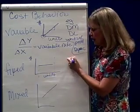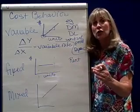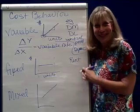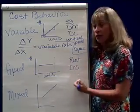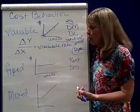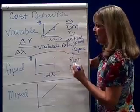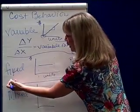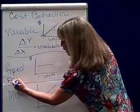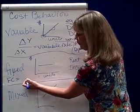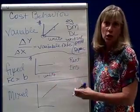Other examples include rent — you pay so much for your rent regardless of how many people live in the apartment — and insurance. Those are what we call fixed costs, fixed for a unit of time. A fixed cost is equal to B, a constant.